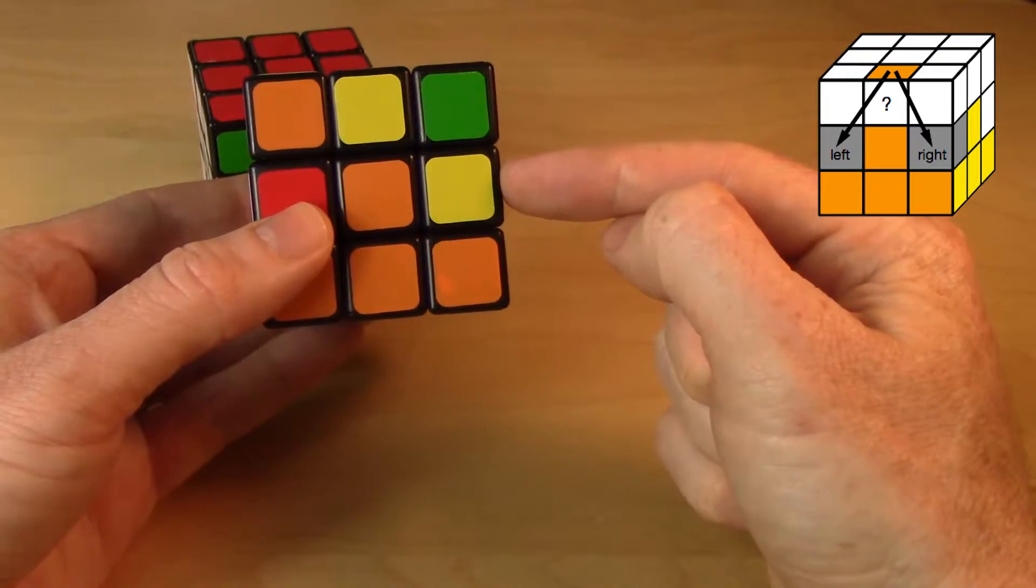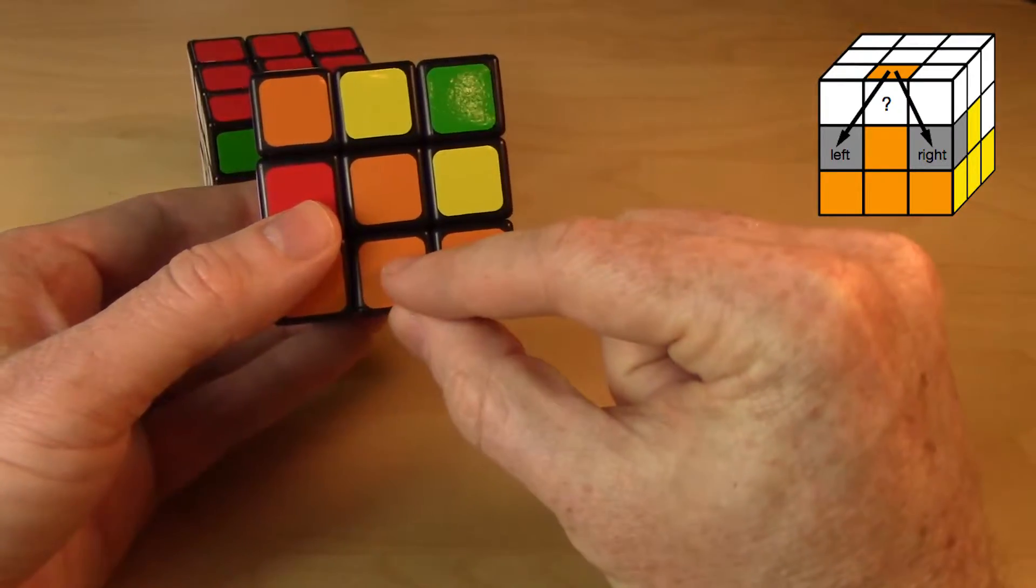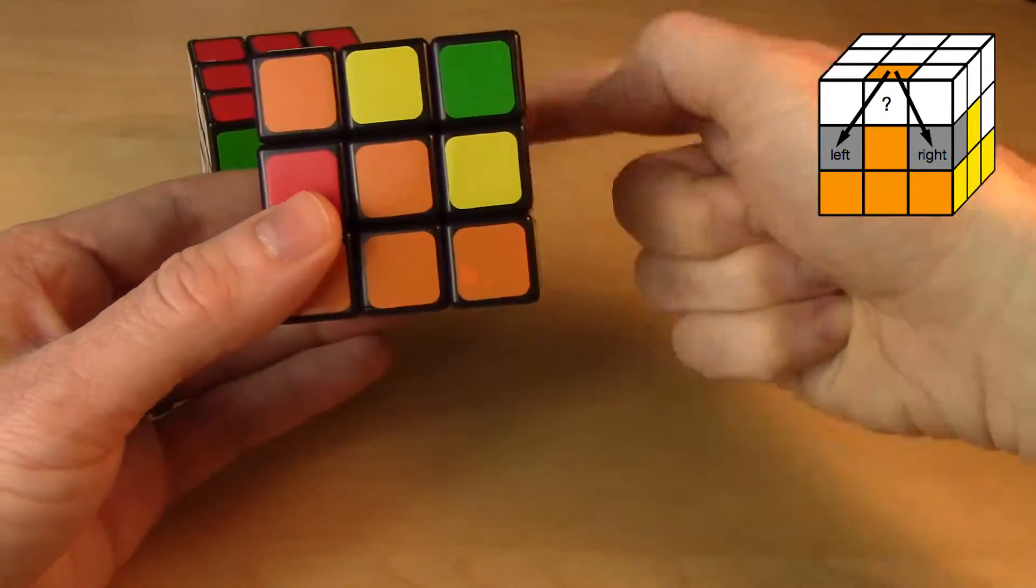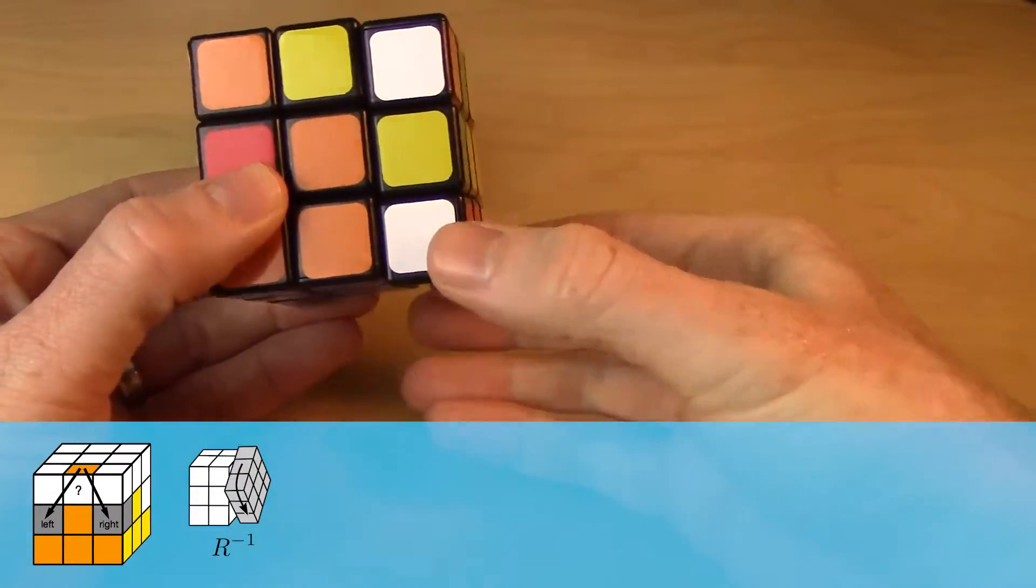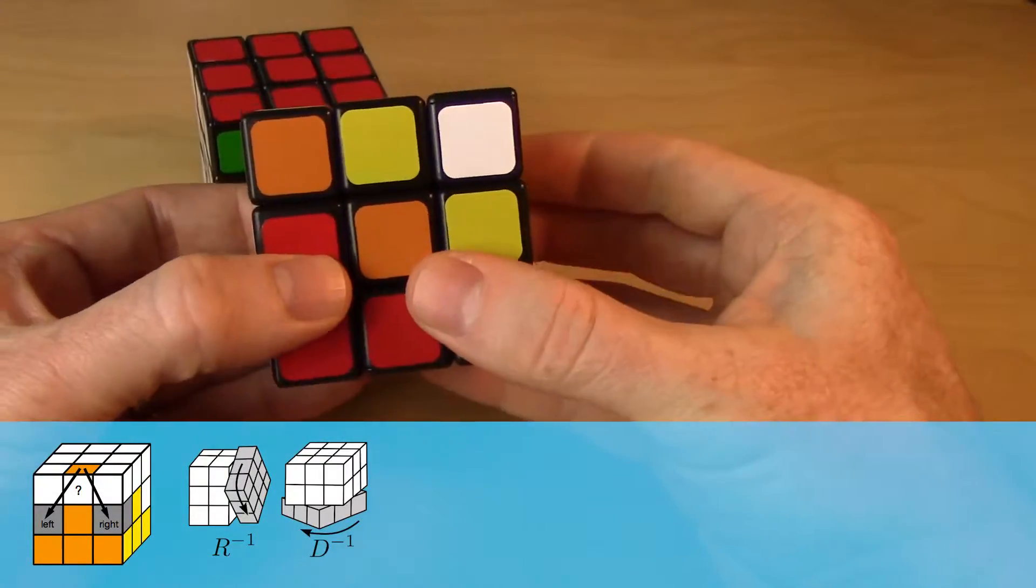What I can do is I can take this piece and move it here, and then do my 3-cycle. So I'm going to take this piece and bring it downstairs, slide it over. I have to remember that sequence.